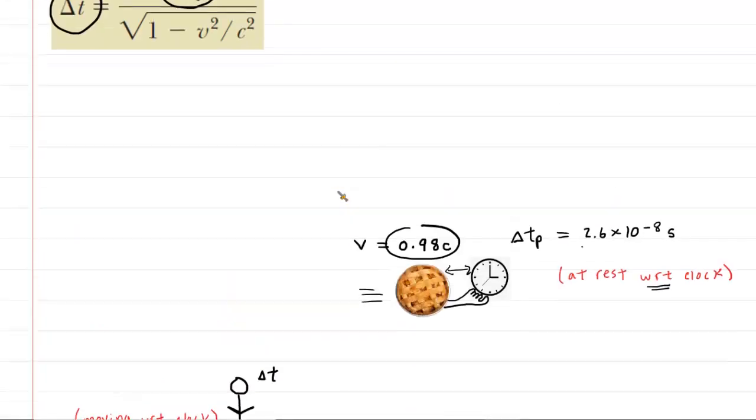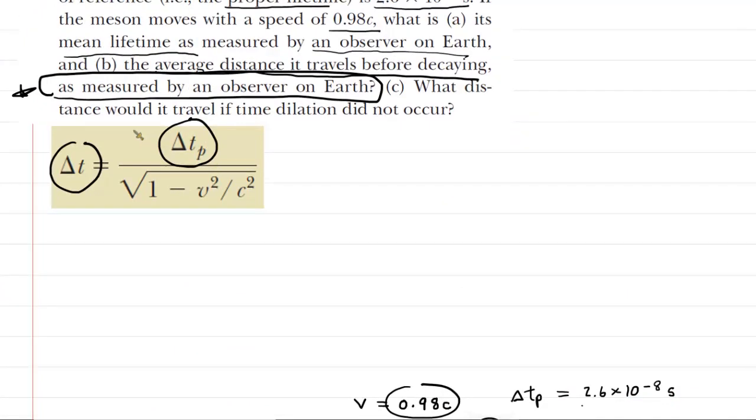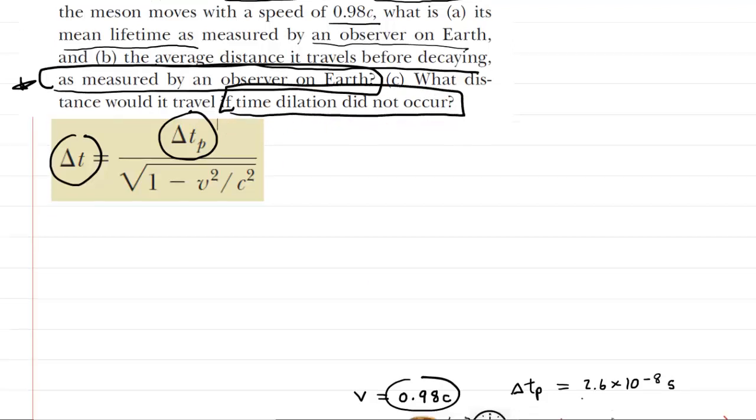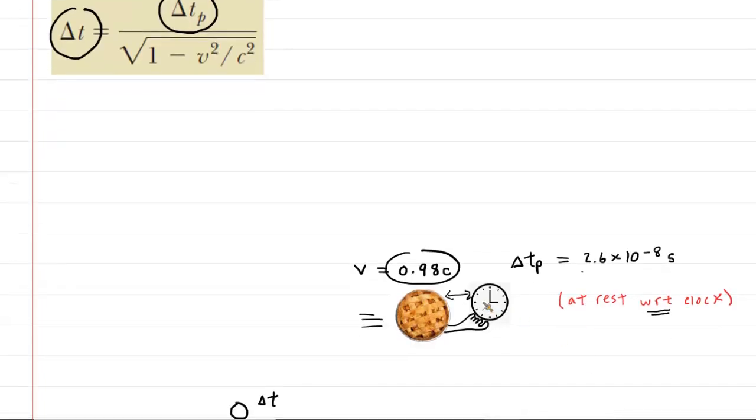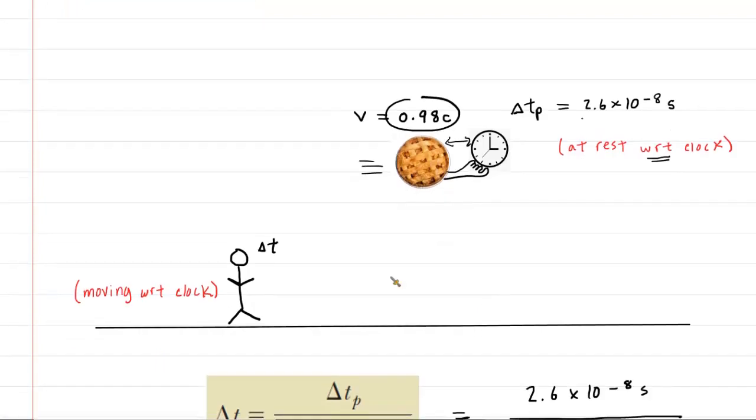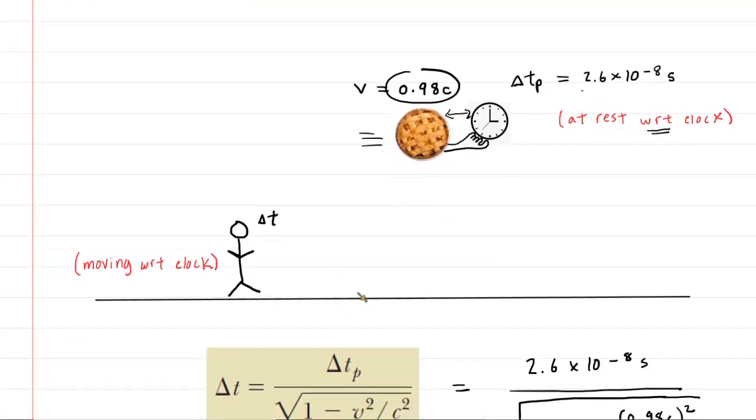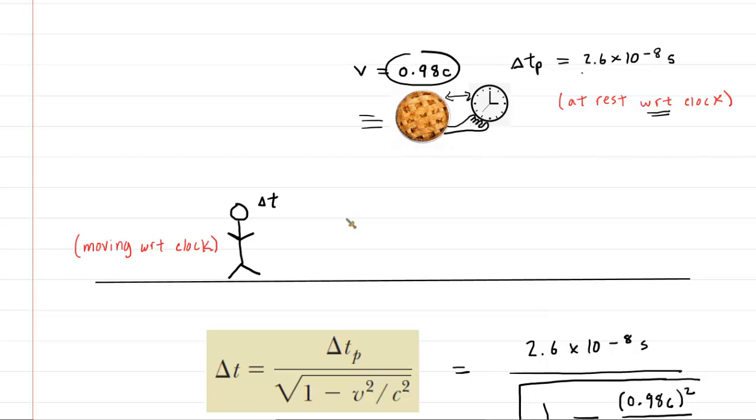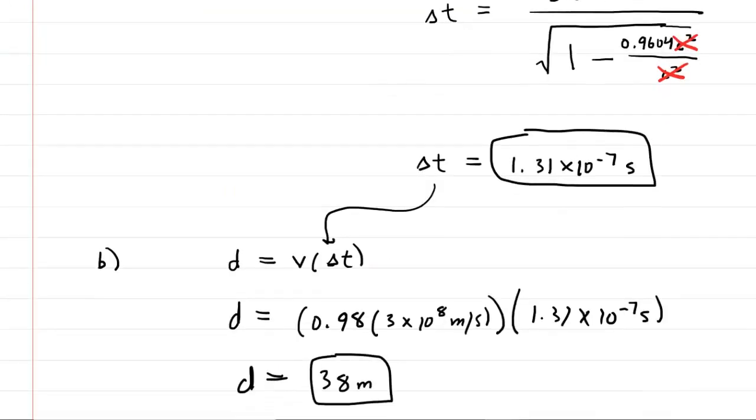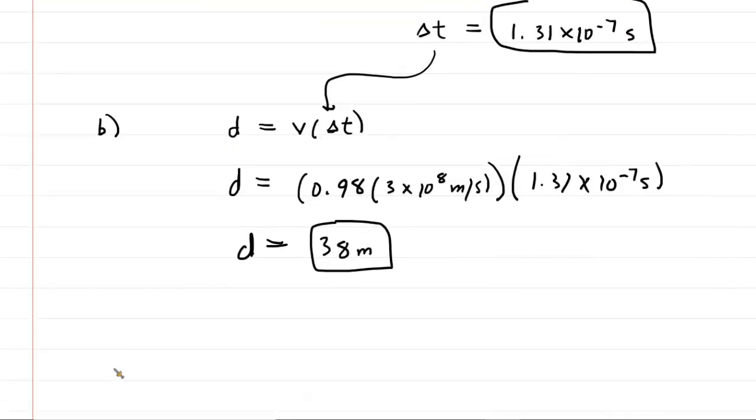Finally, to part c, we need to calculate a distance again. But this time, we're calculating the distance if time dilation did not occur. So what that means is that the time interval as measured by the pi meson would be the same time interval as measured by an observer on Earth. This is not a realistic situation, but the question is nevertheless asking us for it. So we're going to go ahead and this time use the unchanged time interval.